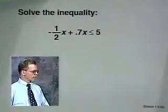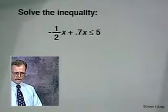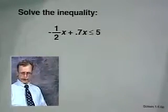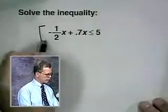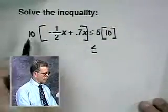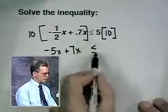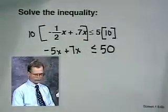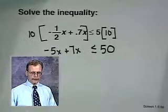Now we'll look at another problem. We'll get it started and then have you finish the problem itself. Solve the inequality negative 1 half x plus 0.7x is less than or equal to 5. The first thing we'd want to do is clear the fractions and decimals. And we can do that by multiplying both sides by 10. This will become negative 5x plus 7x less than or equal to 50.